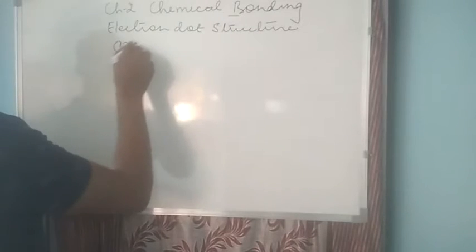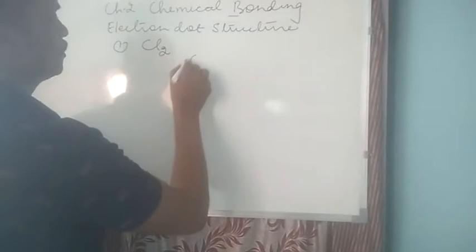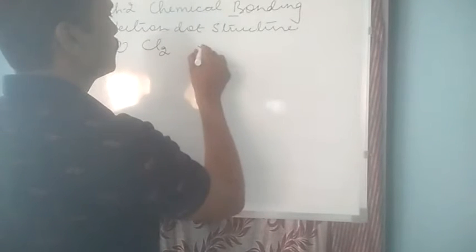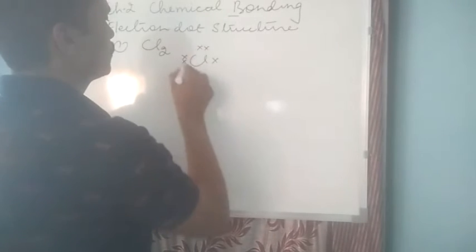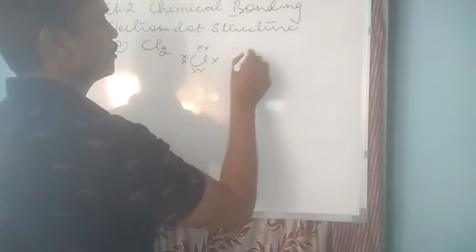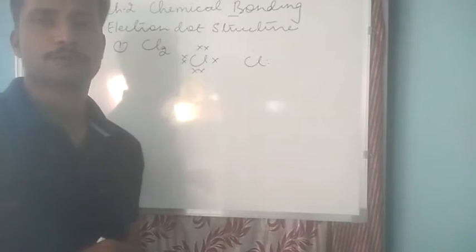First we can see for chlorine molecules Cl2. Chlorine as we know has 7 electrons in its valence shell, so we will be using 7 electrons. See there are 2 chlorine atoms. 7 electrons for this chlorine atom also.